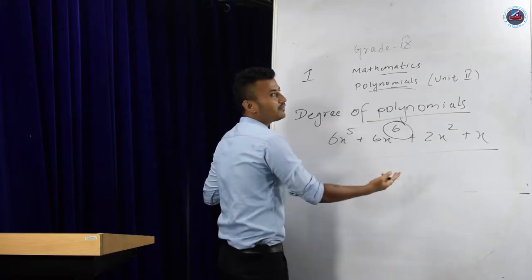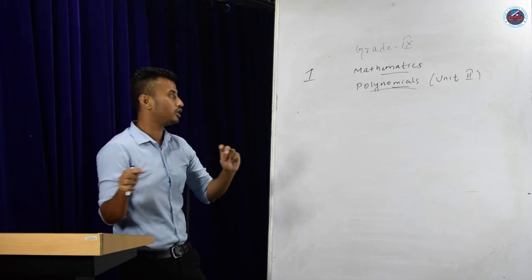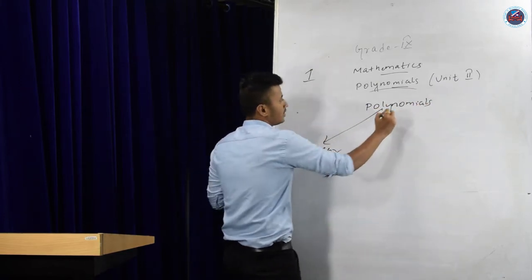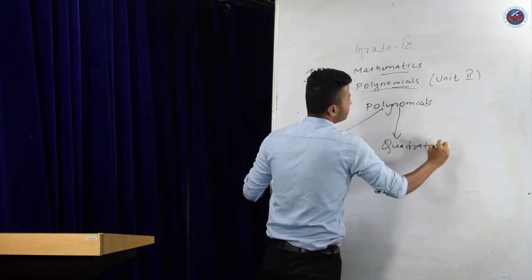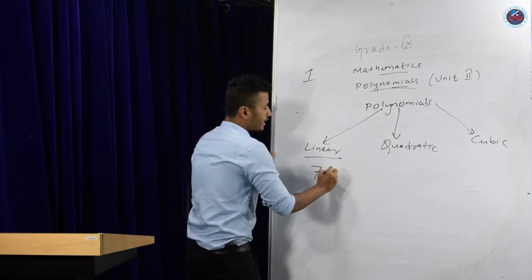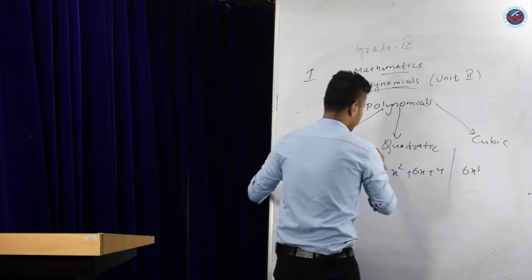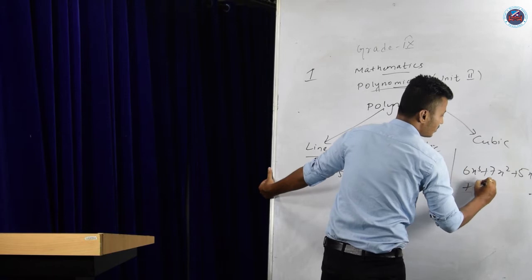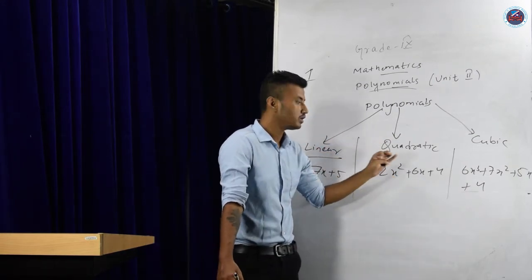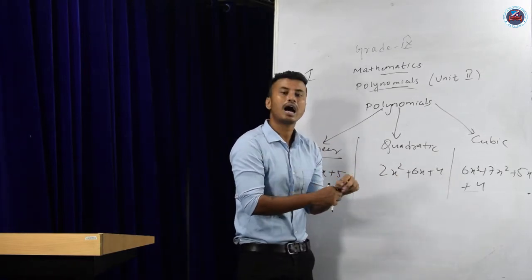Based on the degree of the polynomial, polynomials can be divided into three parts: linear, quadratic, and cubic. Linear polynomial example: 7x plus 5 — highest power of x is 1. Quadratic example: 2x² plus 6x plus 4 — highest power of x is 2. Cubic example: 6x³ plus 7x² plus 5x plus 4 — highest power of x is 3. Hence they are differentiated as linear, quadratic, and cubic polynomials.